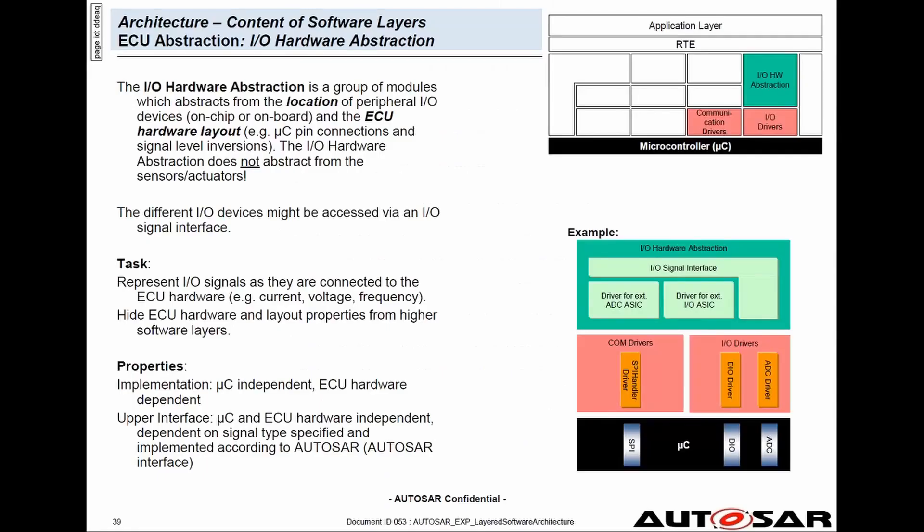ECU abstraction layer can be grouped into the following parts: communication hardware abstraction, IO hardware abstraction, memory hardware abstraction, and onboard device abstraction. We could also have crypto driver abstraction.